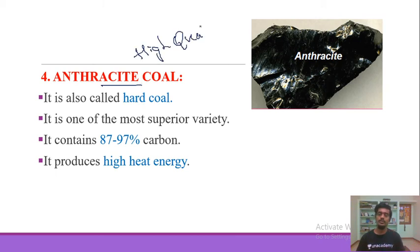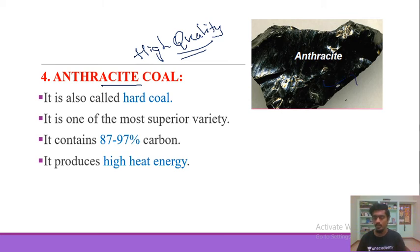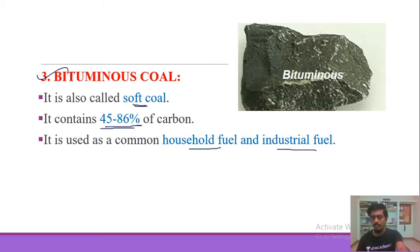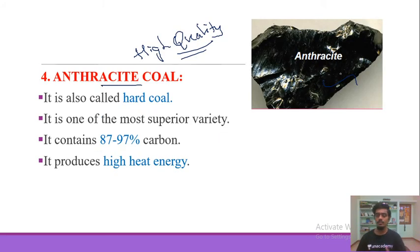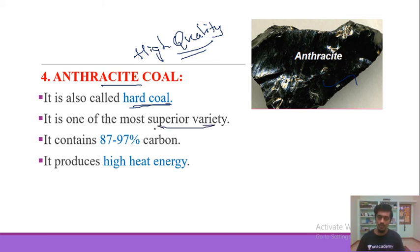The final and highest quality type of coal is anthracite, found for example in Australia. Anthracite has a bright, polished surface unlike the dull appearance of bituminous coal. It is very hard, very superior quality, and contains 87–97% carbon with very high heat energy.